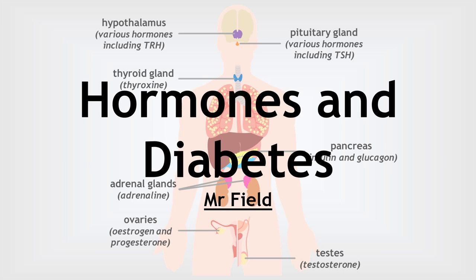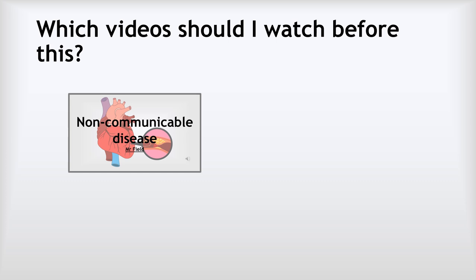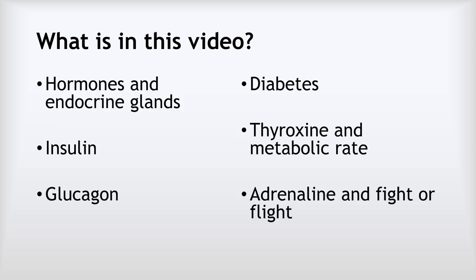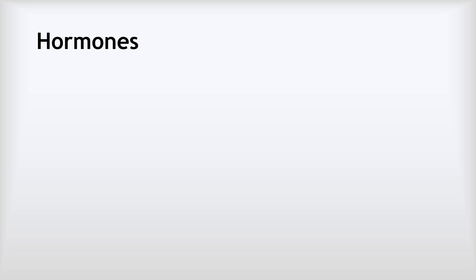Hello, this is Mr. Field and this is my video on hormones and diabetes. Before you watch this video, make sure you've watched the previous one on non-communicable disease because that will help you to understand this one better. In this video, we are going to look at hormones and endocrine glands and what those things all mean. Then we'll look at the effects of insulin and glucagon, diabetes, thyroxine and how we control the metabolic rate, and adrenaline and the fight or flight response. Let's start by looking at what we mean by hormones and getting in place the language that will help us with the rest of this video.